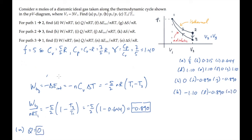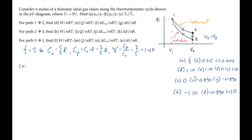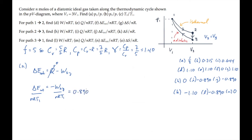Part N asks for the change in internal energy, normalized. Starting from the first law with Q equals 0, the change in internal energy is negative the work done by the gas. When we normalize this, we get negative the answer to Part L, so that's 0.890. The last part asks for the normalized change in entropy. For an adiabatic process where Q is 0, we get no change in entropy.